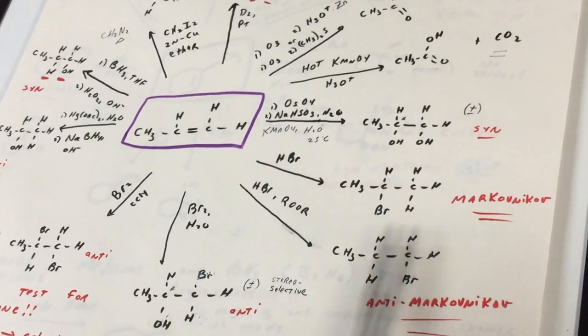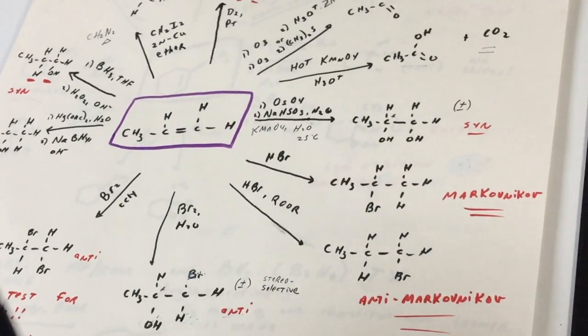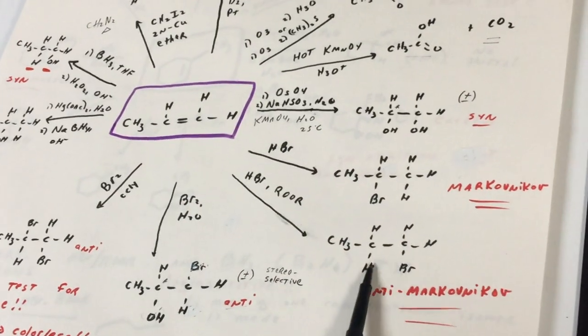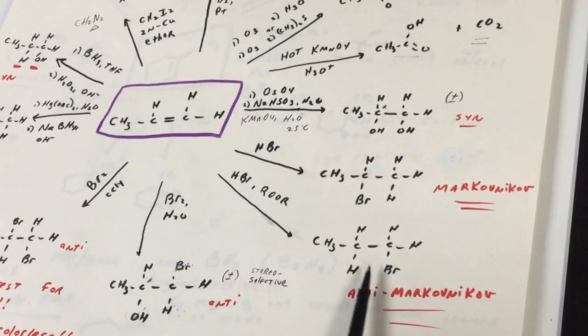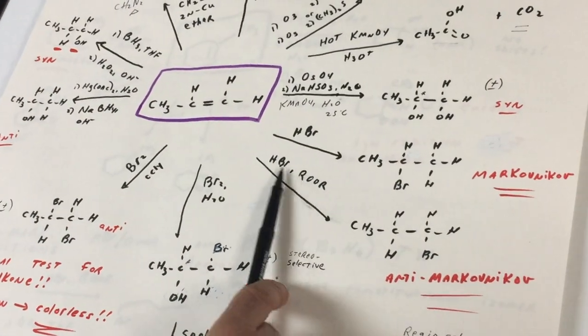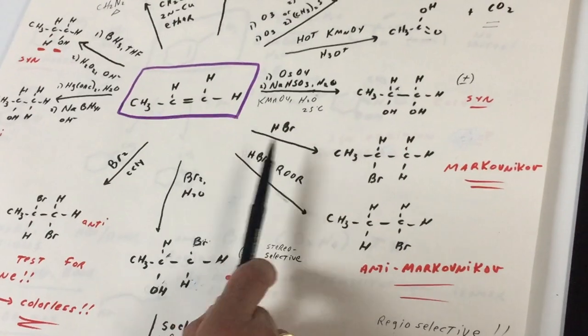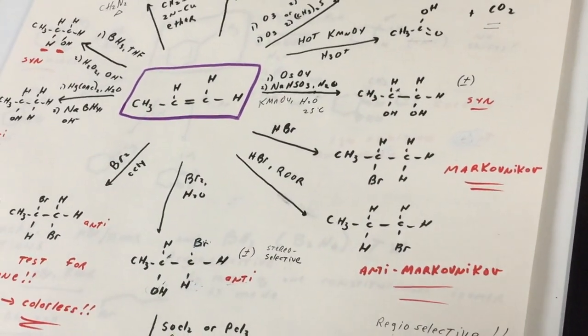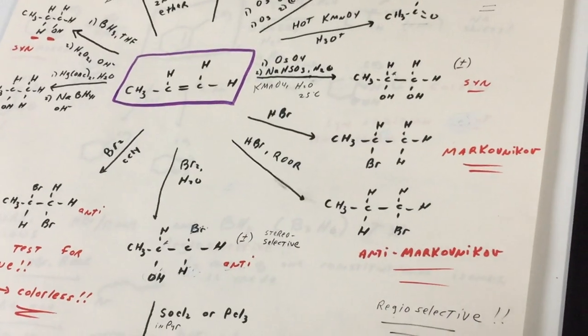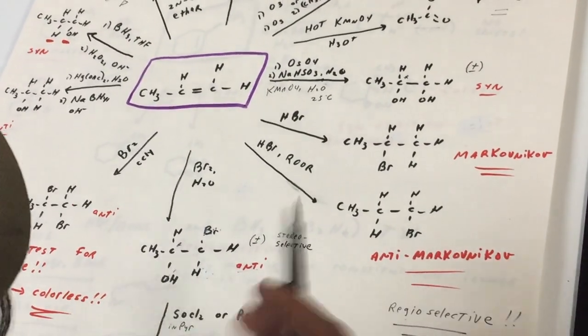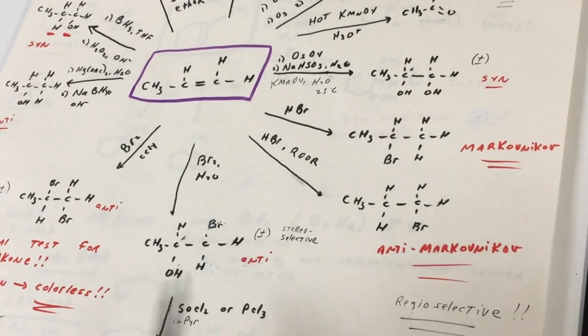HBr and peroxide does an anti-Markovnikov addition. When you do anti-Markovnikov, the carbon with the most Hs gets the Br. The other gets the H. That's a short bed reaction for the exam. Make sure you understand it. And it only works with HBr. HCl, HI will not do the reaction. Only with HBr, the reaction is sufficiently exothermic. With the other, HCl, HI, it would be too endothermic, and therefore it's not going to go.